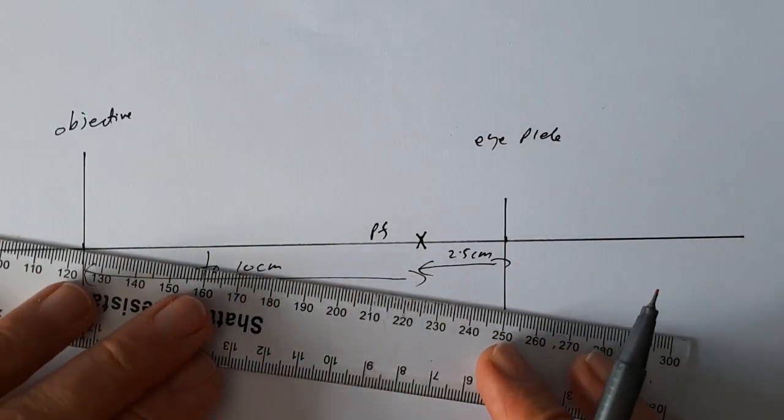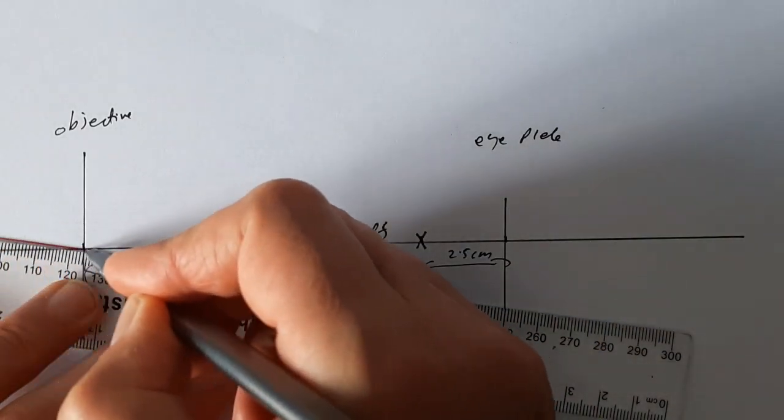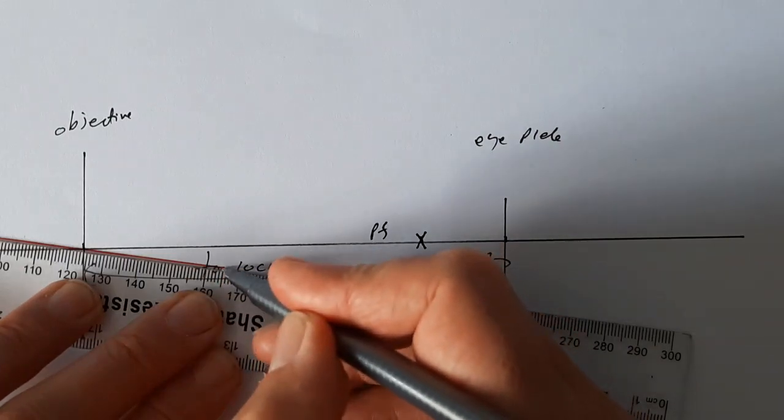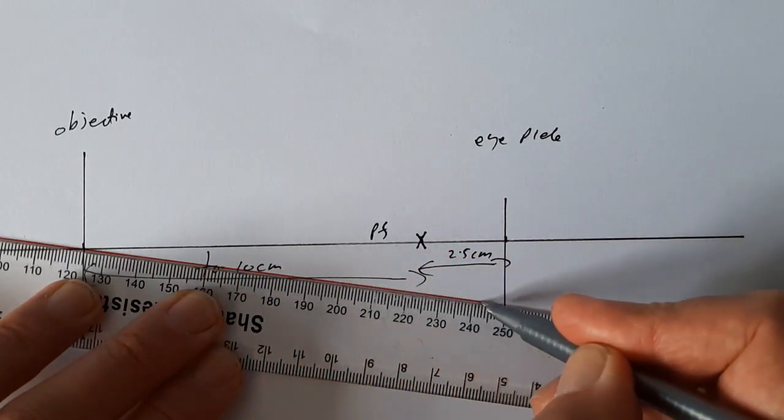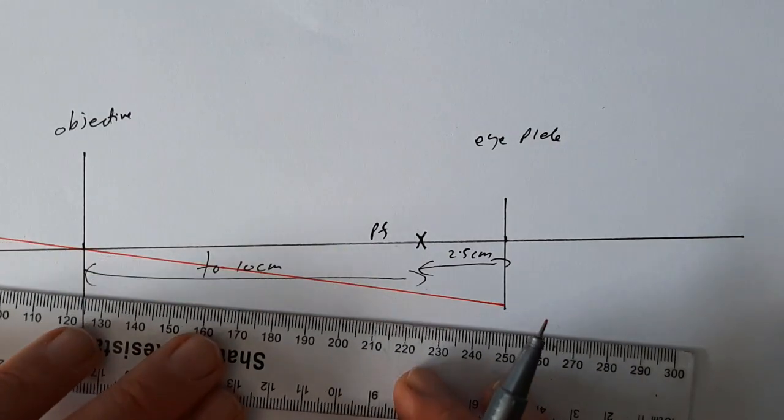So we have a ray come through the principal focus, so through the center of the lens. It carries on a straight line because all rays that go through the center of the lens carry on as a straight line.